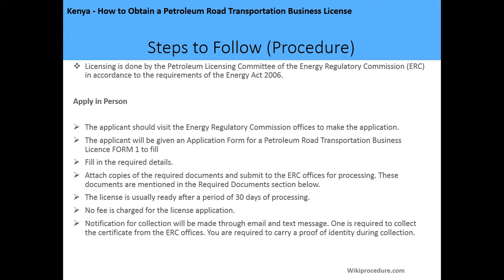The steps to follow: licensing is done by the Petroleum Licensing Committee of the Energy Regulatory Commission (ERC) in accordance with the Energy Act 2006. There are two methods of application — in person or online. To apply in person, visit the ERC offices where you will be given the application form for the petroleum road transportation business license, Form Number One, to fill in.